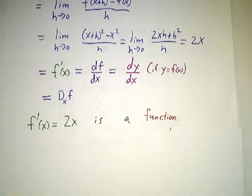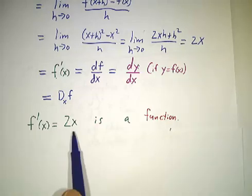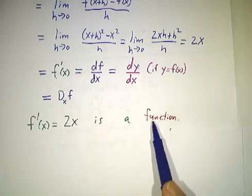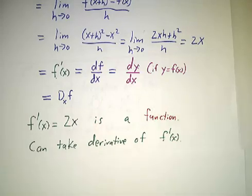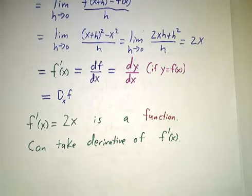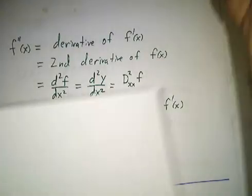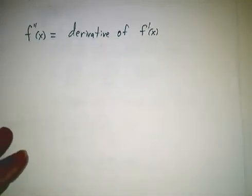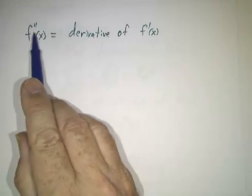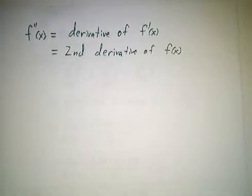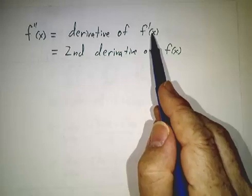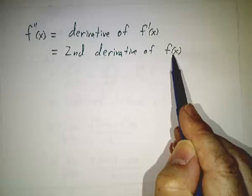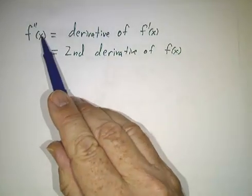Okay, so now we've got f prime equals 2x. Yeah, but that's a function in its own right. So if it's a function, we can take its derivative to understand how quickly it's changing. Now, the derivative of f prime, if we're using prime notation, is usually denoted f double prime. And it's the first derivative of f prime, or it's the second derivative of f, because you have to take a derivative of f twice to get from f to f prime to f double prime.